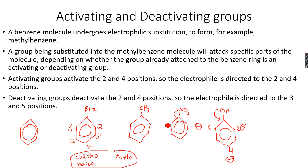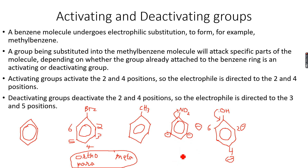So relative to the two, four, and six positions, the three and five positions are activated — the meta positions are activated. Because these positions now have a lower negative charge density, automatically the meta positions have a higher negative charge density. So now my electrophile can only attach to the meta positions, which are the three and the five positions.